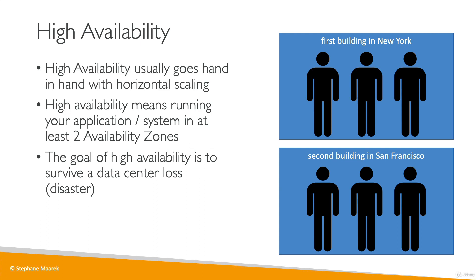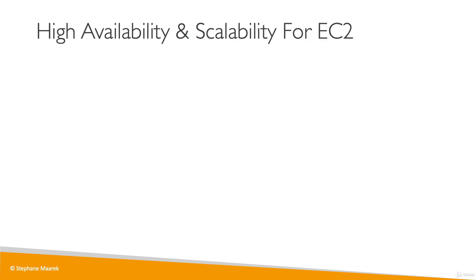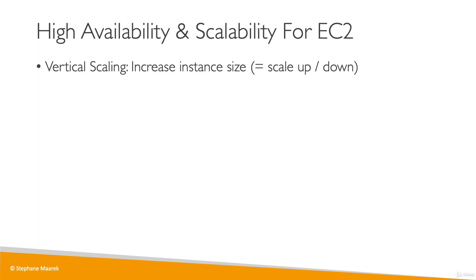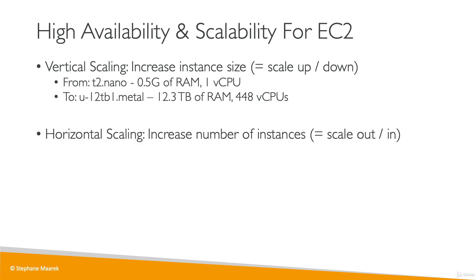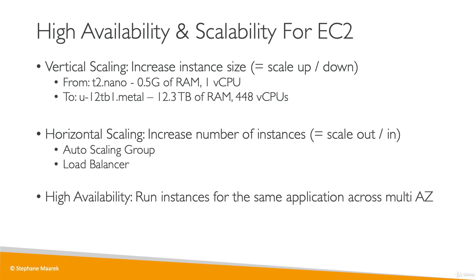In AWS, there could be an earthquake, a power outage, or a lot of things. So to summarize high availability and scalability for EC2: vertical scaling means increasing the instance size — scaling up when increasing, scaling down when decreasing — ranging from a T2 nano with 0.5 GB of RAM and 1 vCPU all the way to a U-12TB1.metal with 12.3 terabytes of RAM and 448 vCPUs. For horizontal scaling, increasing the number of instances is called scaling out, and decreasing is called scaling in; we'll use an auto-scaling group and a load balancer for this. High availability means running the same application across multiple availability zones, leveraged by an auto-scaling group in multi-AZ mode and a load balancer in multi-AZ.